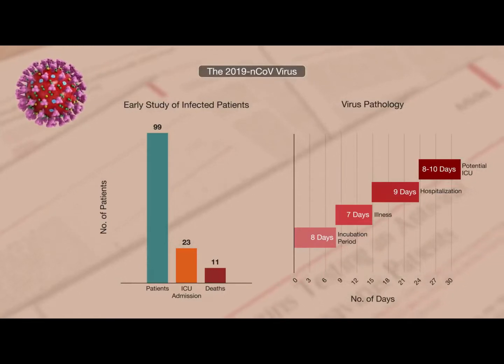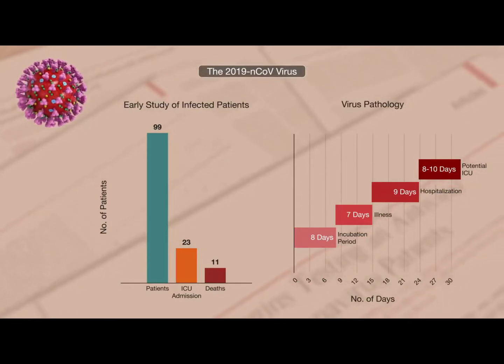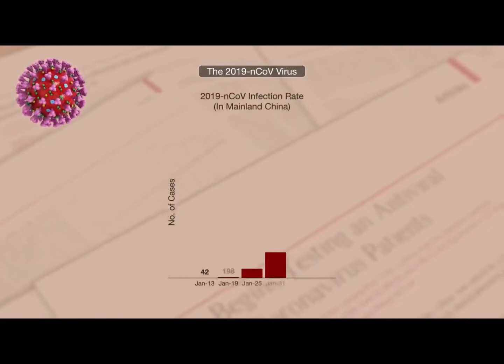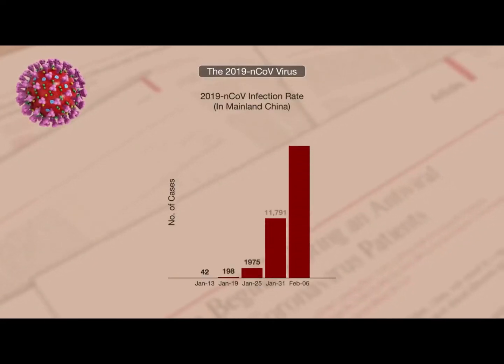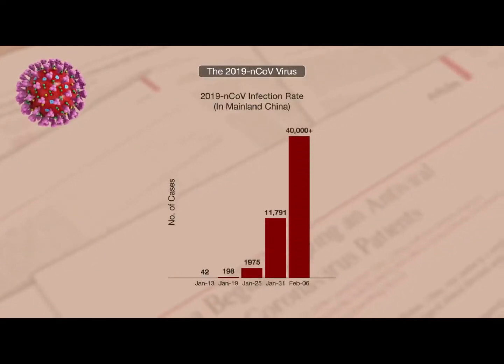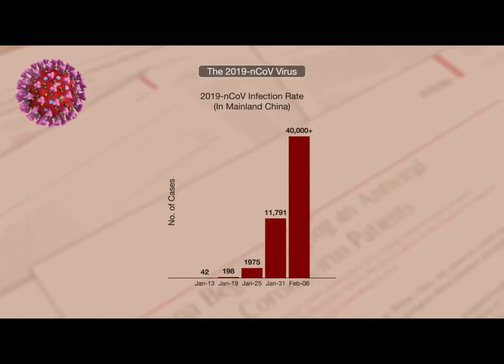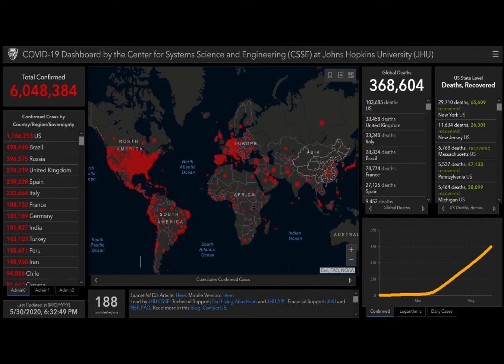Other indications put the mortality rate closer to 4%. As of February 6th, the virus had over 40,000 confirmed cases in China alone, with almost 200 cases in over 25 other countries.